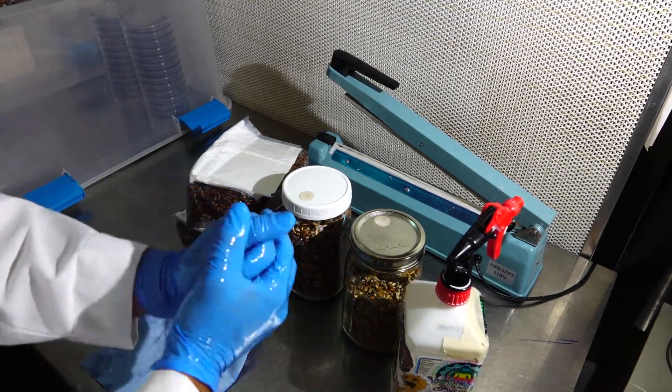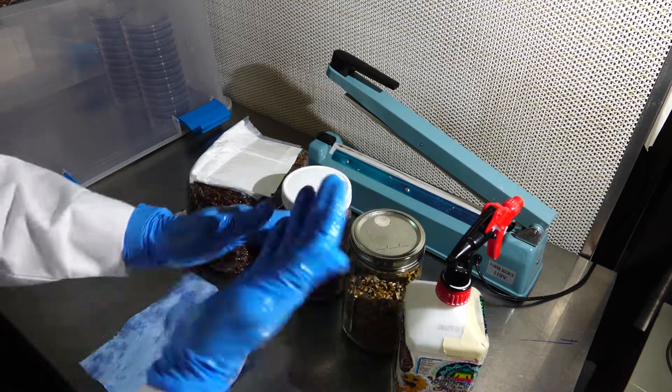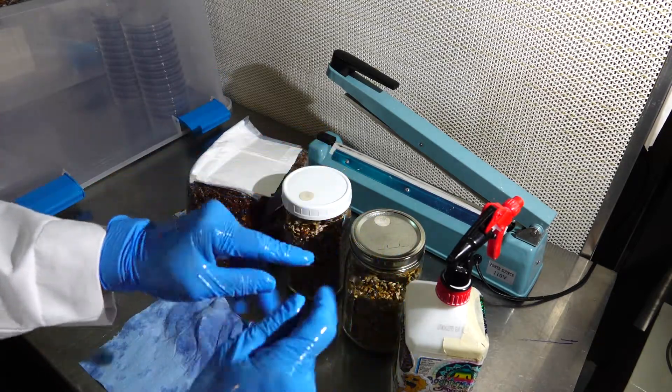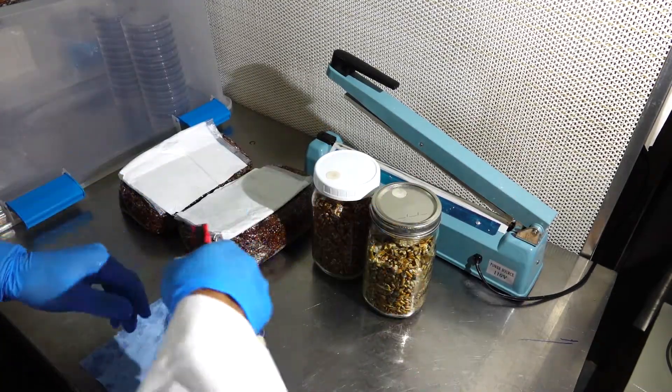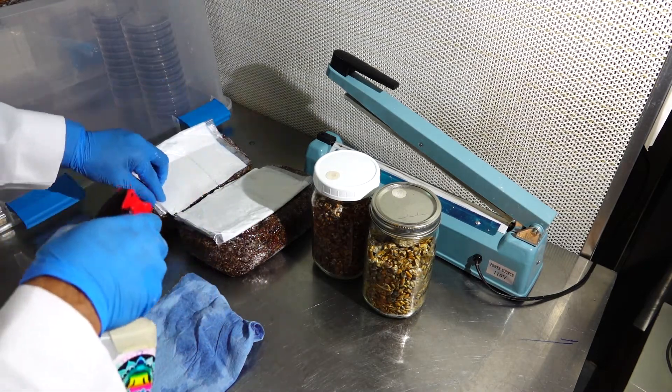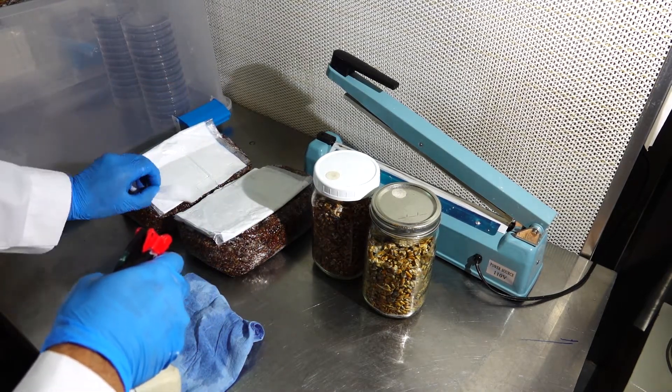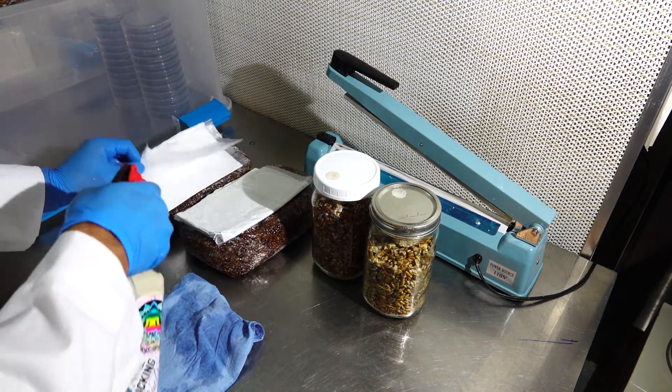After your jars have been wiped down and thoroughly sanitized, you're going to want to spray down your hands with isopropyl alcohol to make sure that you also clear away any bacteria that might be lingering on your hands. You will also want to spray down your bags to make sure that anything that's lingering on the lip of the bag is also cleared away.